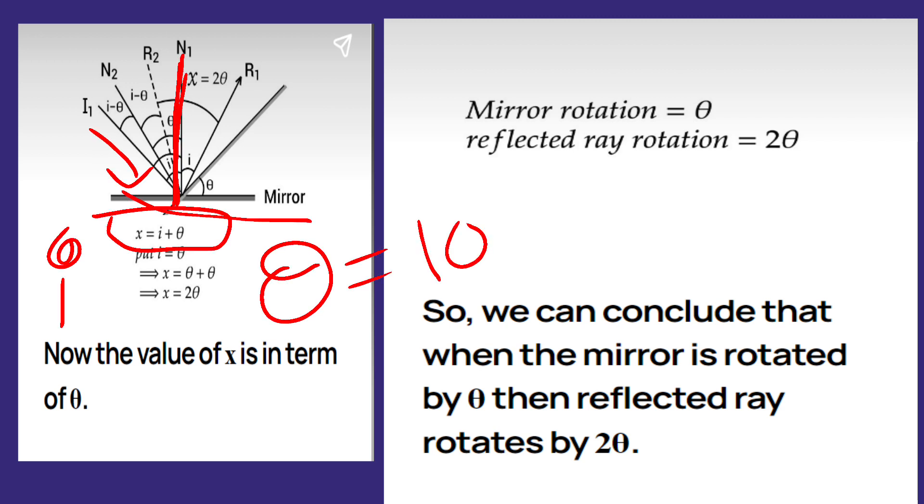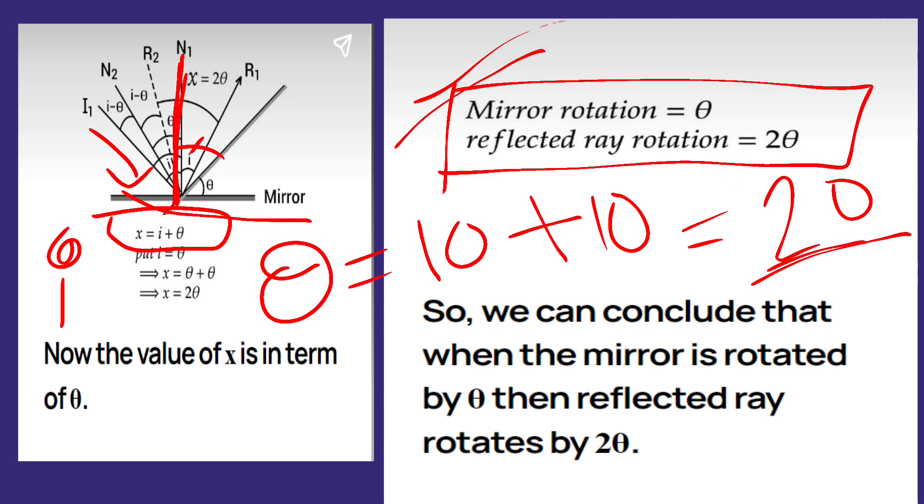Then the reflected angle is nothing but i. But if the reflected angle has changed because of the changing of the position of the man or the mirror, then it is calculated by adding those two numbers, that is 10 plus 10 degrees, that is equal to 20 degrees. And that is why here they have given that mirror rotation is theta, that means reflected ray rotation is equal to 2 theta.